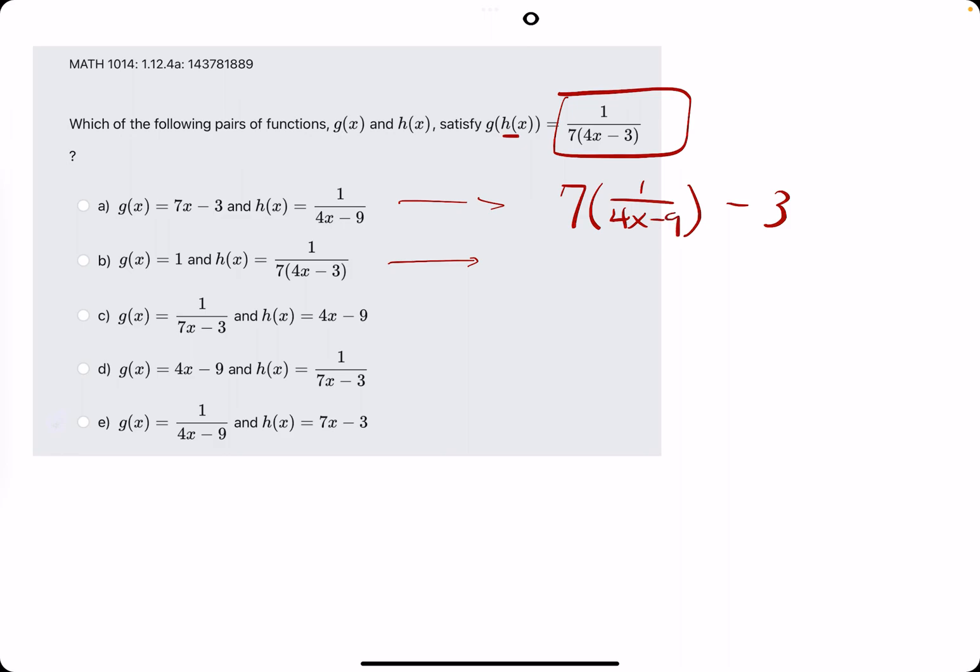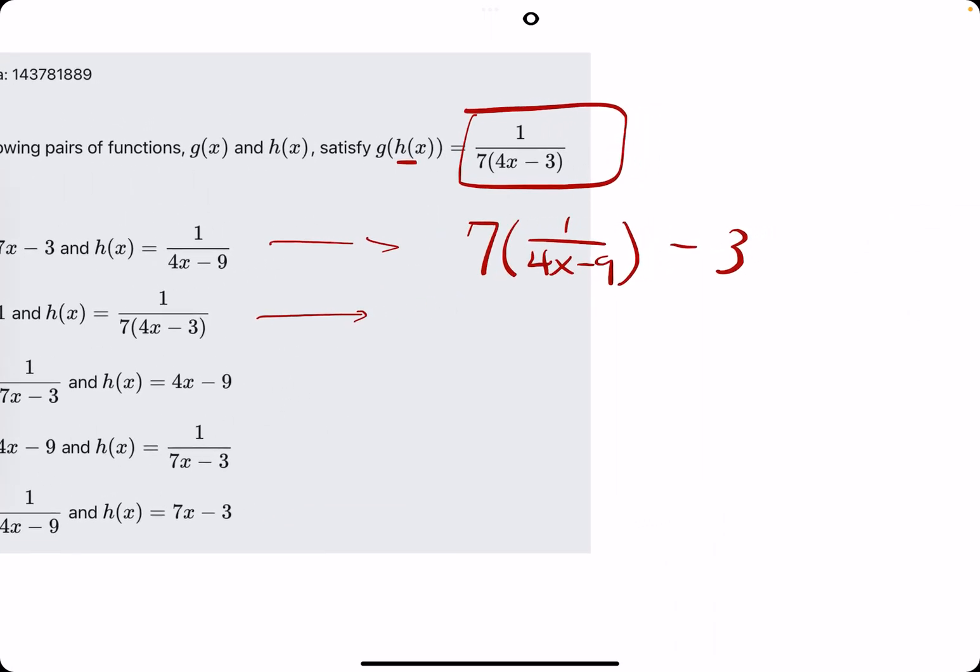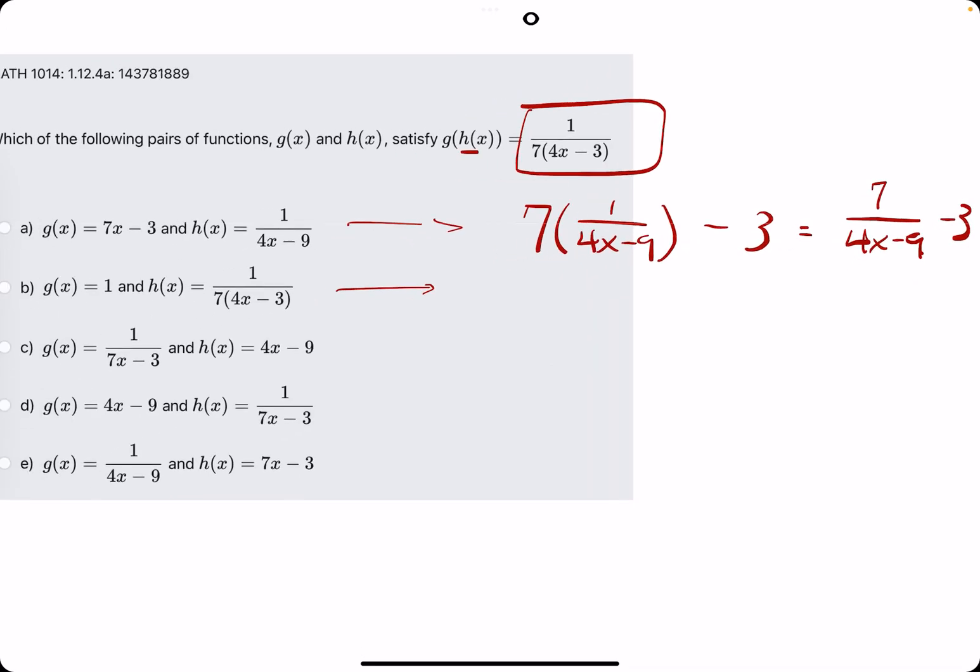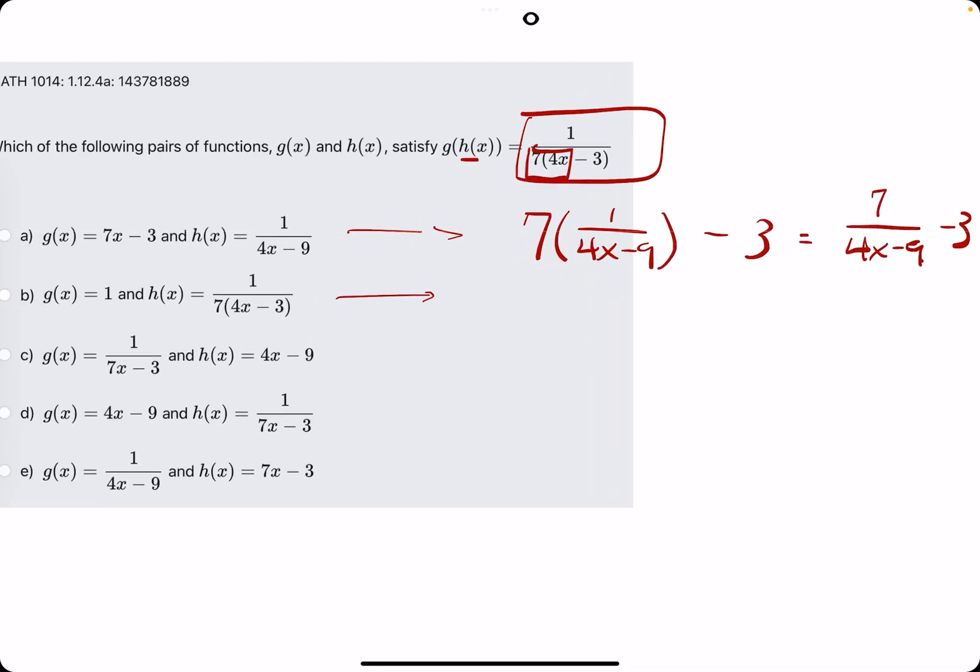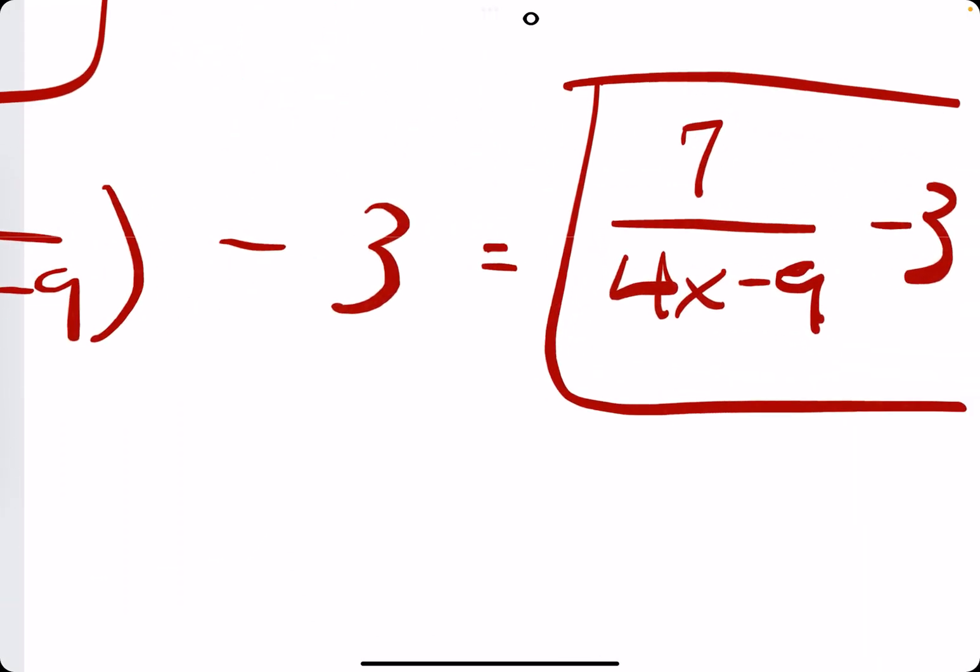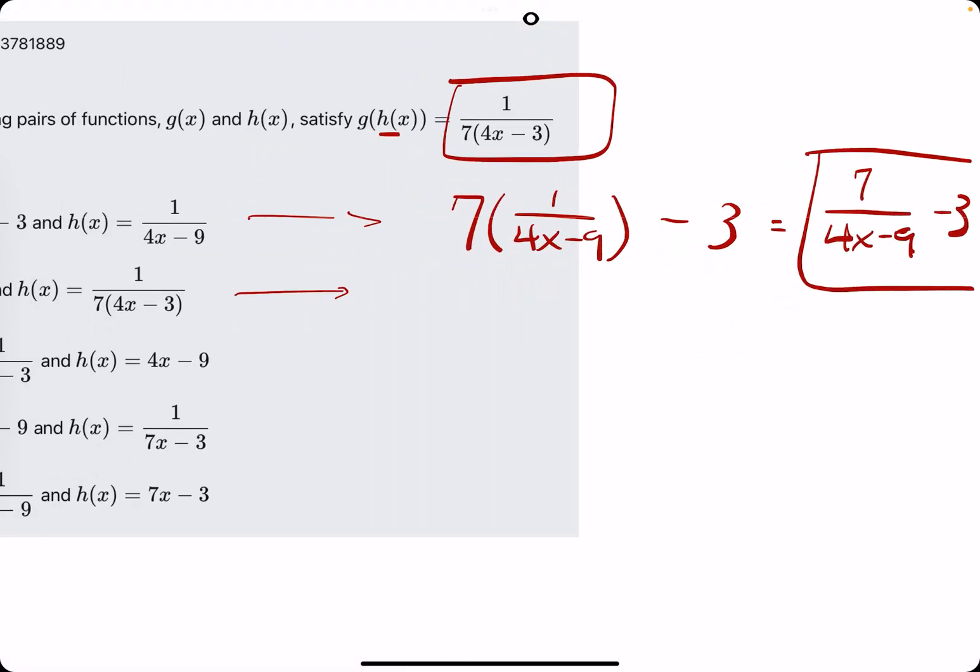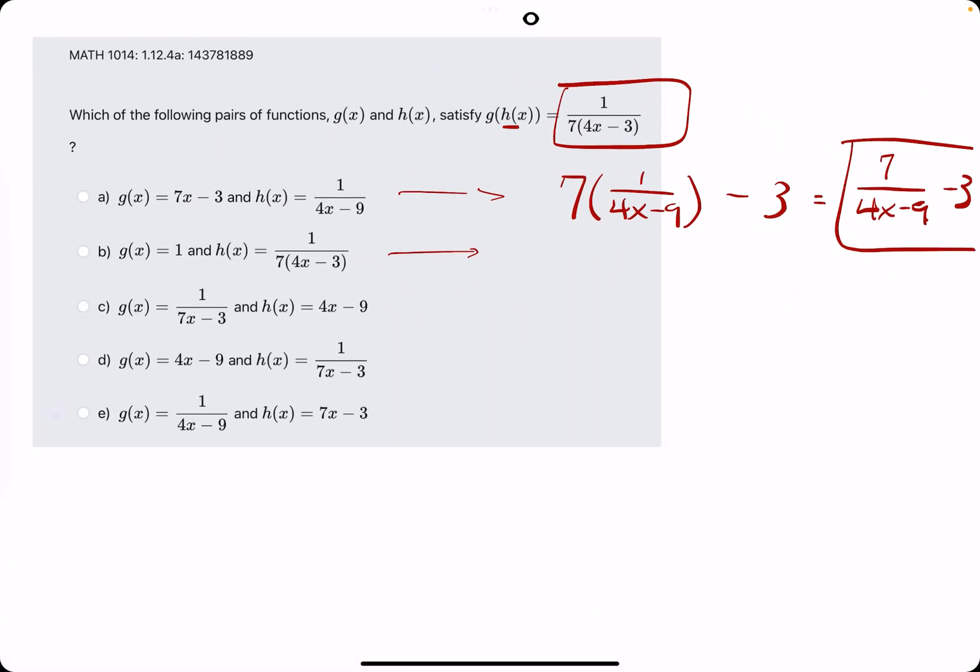So my question would be could this ever be simplified to this? And my answer would be no because right away, if we multiplied 7 times that fraction, the 7 would end up being on top, so 7 over 4x minus 9 and then minus 3. The main thing I would look for is in the final answer, we have 7 times 4 on the bottom, but in this case, 7 and 4 didn't get pushed next to each other or multiplied by each other at all. So a is out of here.